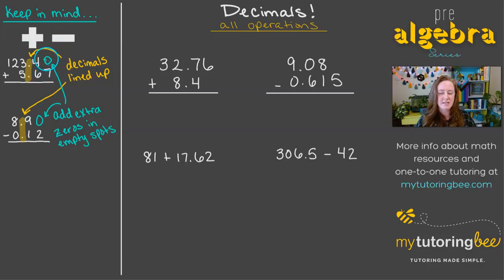I do have some notes over here on the side just to keep in mind. With addition and subtraction, the rules are the same. You just want to make sure that your place values are lined up. And then something else that I like to do and tell my students is if you have empty spaces, just go ahead and fill those in with zero before you start adding or subtracting.